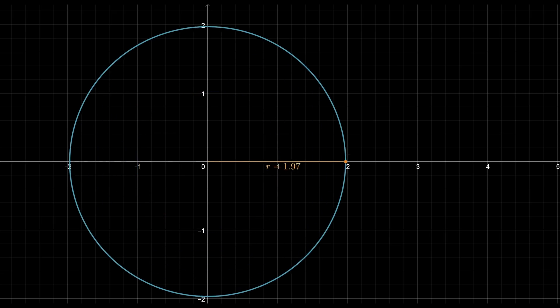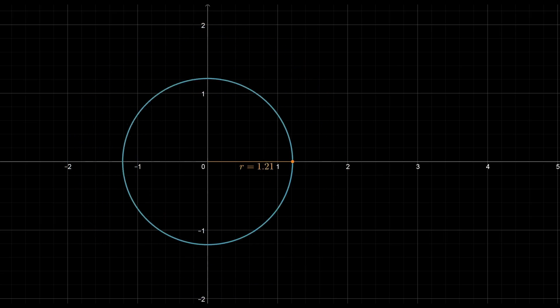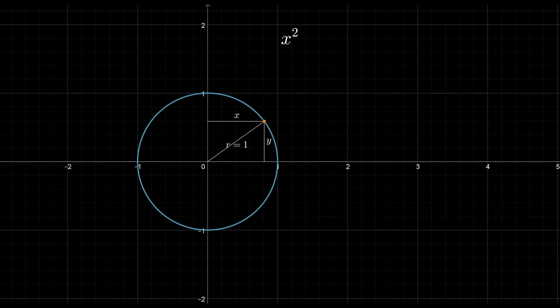A circle is all the points which are the same distance r away from the centre. Using Pythagoras, we can get the equation for a circle. The x-coordinate squared plus the y-coordinate squared equals the radius squared.